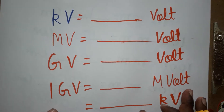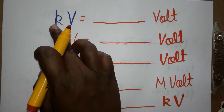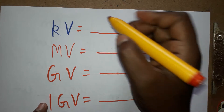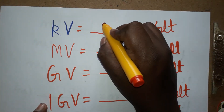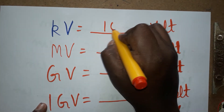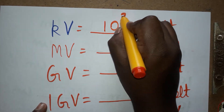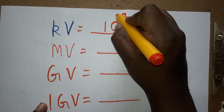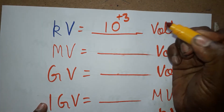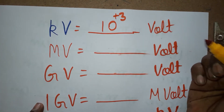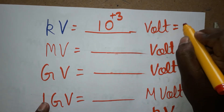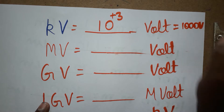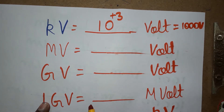If you like my channel, please subscribe. First we will learn: KV is how many V? It is 1000 V. 1000 we can write as 10 power 3, meaning 10 power plus 3, which is equal to 1000 V.